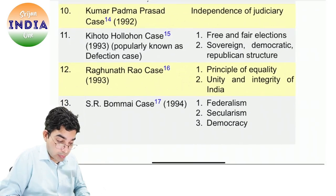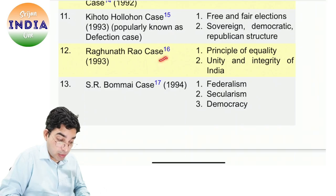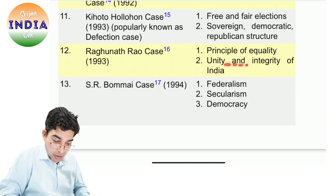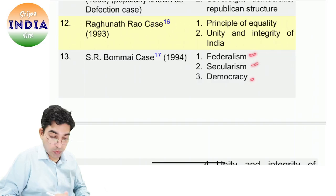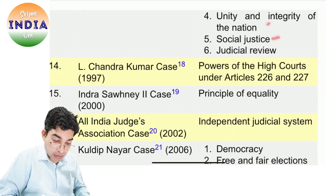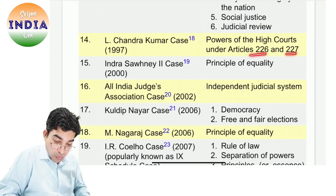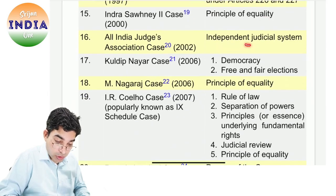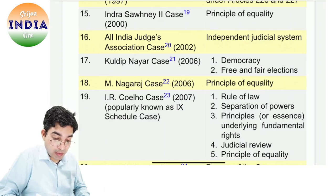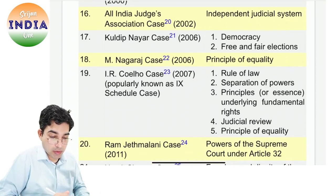Kihoto Hollohan case mein defection case aaya — free and fair election hona chahiye, sovereign democratic republican structure hai. Raghunath Rao case mein equality aaya. Integrity of India hamare liye utmost importance ki hai — unity and integrity zaroori hai. Bommai case important hai — federalism, secularism, democracy, unity, integrity, social justice, judicial review hona chahiye. L. Chandrakumar case aaya — Articles 226-227, High Court ki power. Indira Sawhney second case — equality. All India Judge Association case — independent judicial system. Ek case mein nahi decide hua ki what is basic structure — over the period of time gradually hum is concept pe aaye hain.